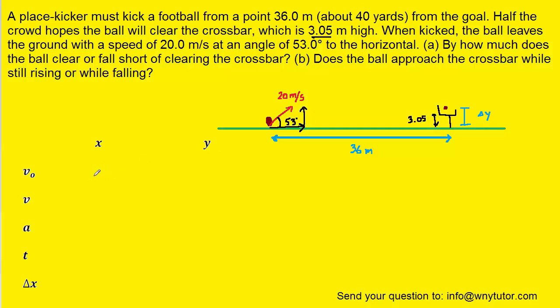So in other words, the components of the initial velocity will look like the following. Again, using the cosine for the x component and the sine for the y component. Of course the 20 was the initial speed that the ball was kicked.